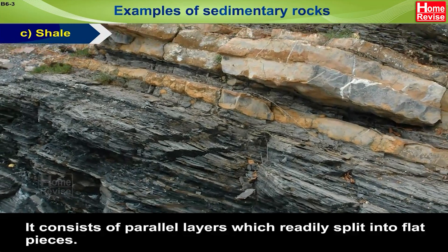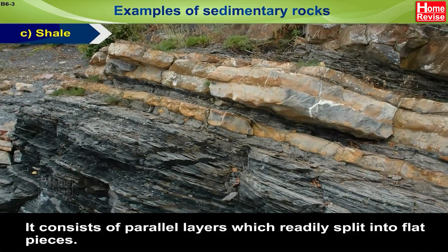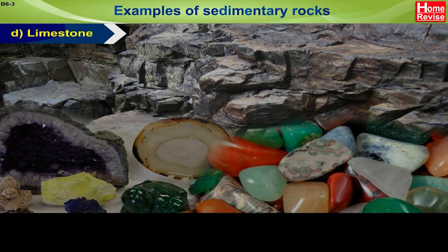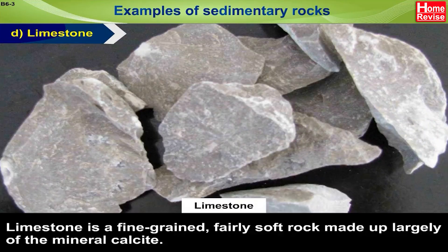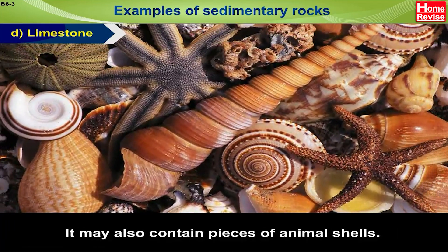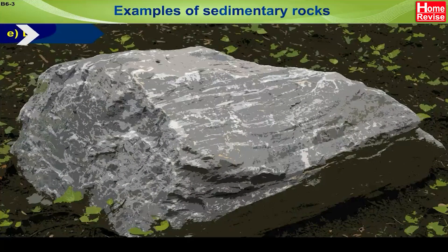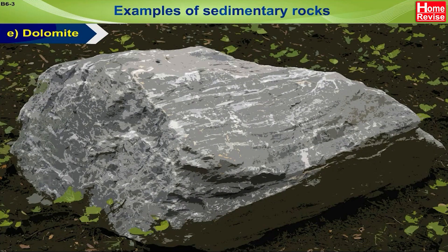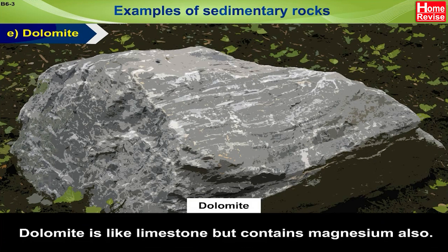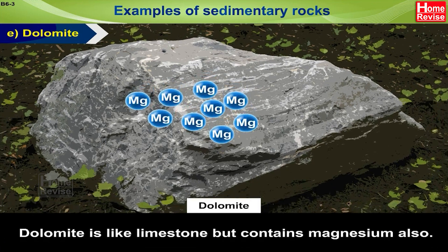Shale consists of parallel layers which readily split into flat pieces. D. Limestone. Limestone is a fine-grained, fairly soft rock made up largely of the mineral calcite. It may also contain pieces of animal shells. E. Dolomite. Dolomite is like limestone but contains magnesium also.